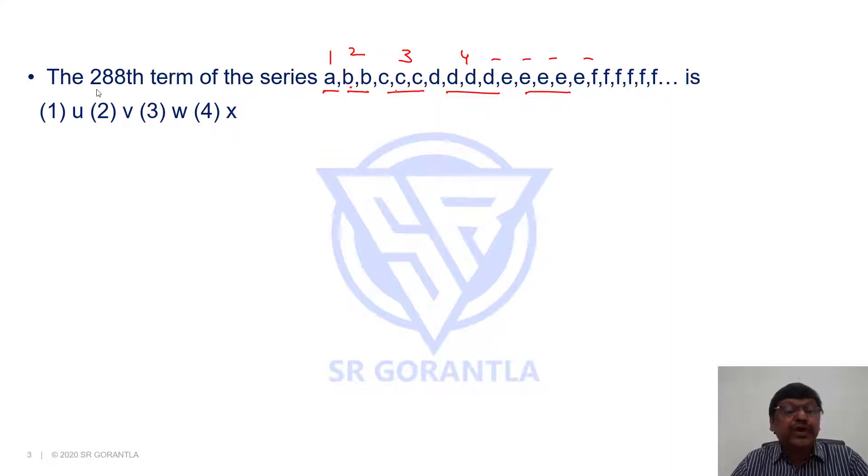We need 288th term. What is sum of first n terms formula? Sum of first n terms equals to n into n plus 1 by 2.